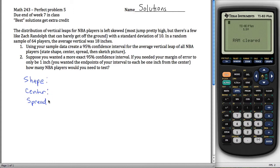We can do that. The shape ends up being approximately normal. The reason it's approximately normal is because our value of n here. The distribution of vertical leaps for NBA players is left skewed, or at least I'm claiming that it is. Most people jump really high, but there's a few that don't jump at all.